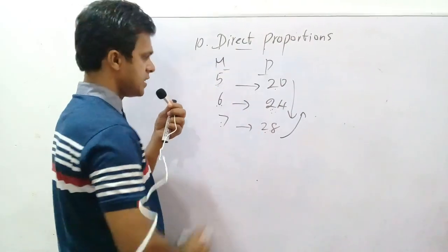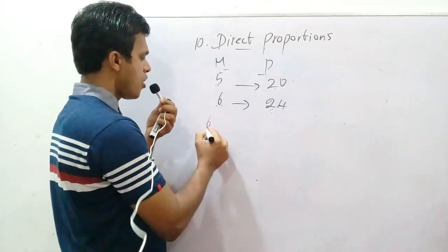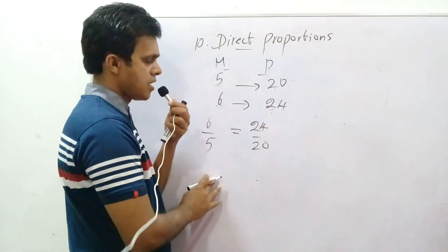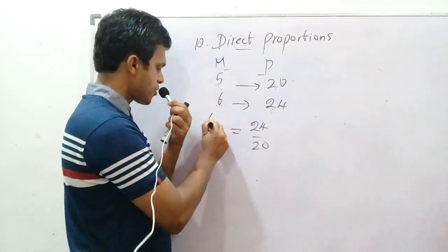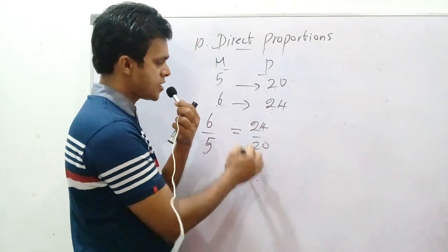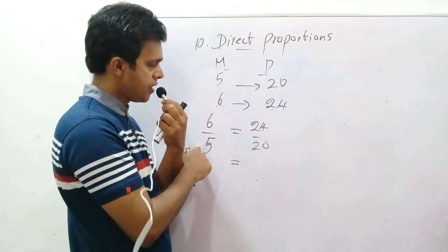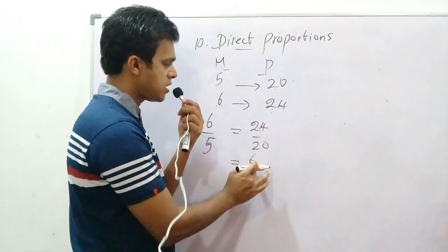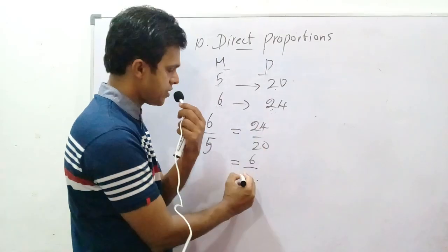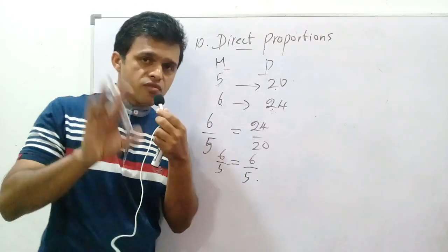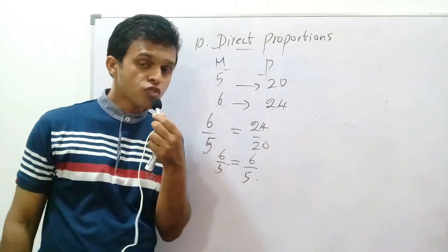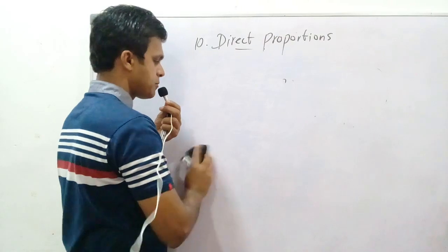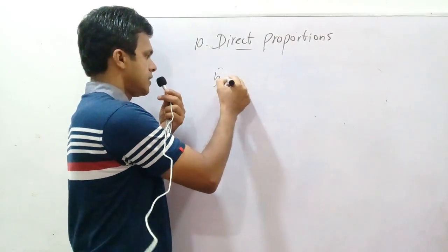In direct proportions, you can take this relation: 6 over 5 equals 24 over 20. When you simplify this fraction, 24 divided by 4 is 6 and 20 divided by 4 is 5, so 6 over 5 equals 6 over 5. That is the relation I used in the previous video.